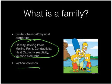Keep in mind that those families come in vertical columns — those are the 18 columns across the periodic table.